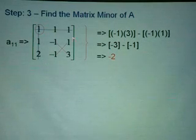Then what remains here, you do a cross multiplication. So we have negative one times three equals to negative three. Negative one times one equals to negative one. So you minus, the answer will be negative two.